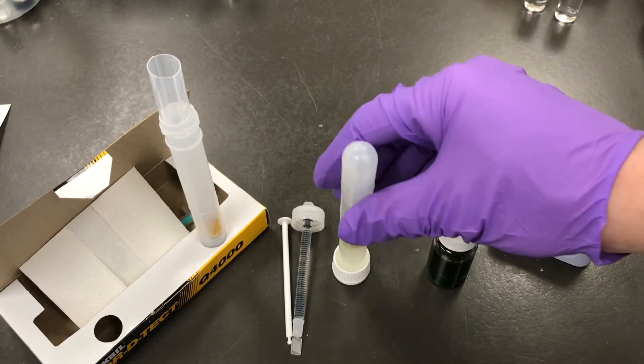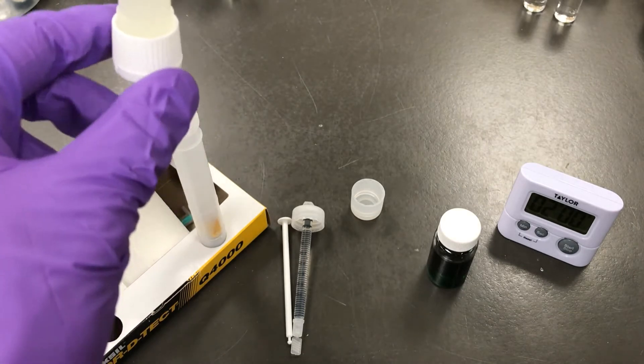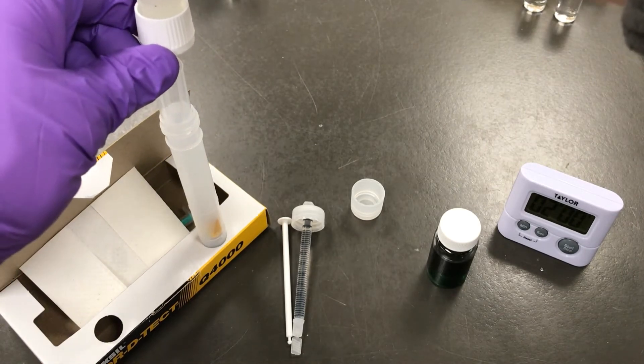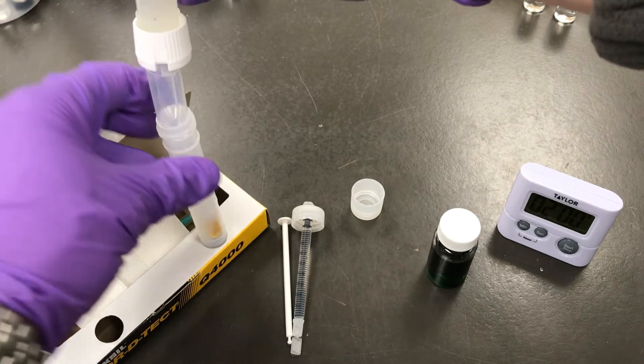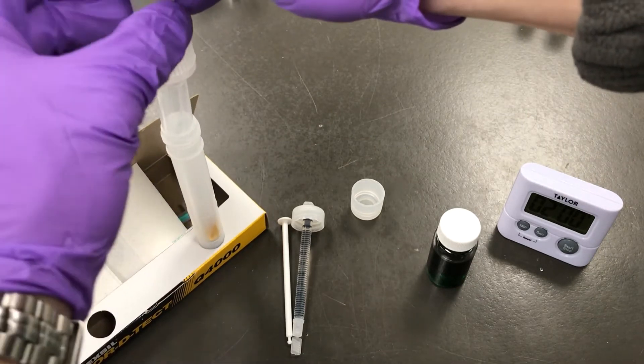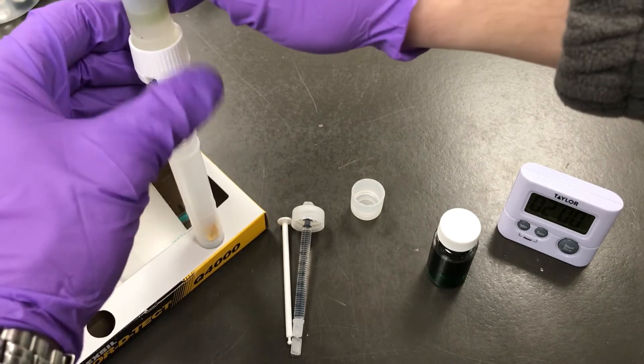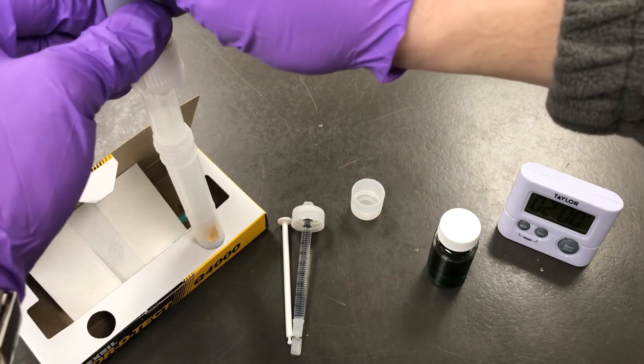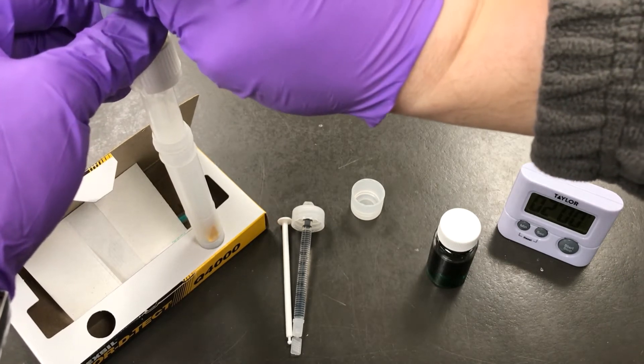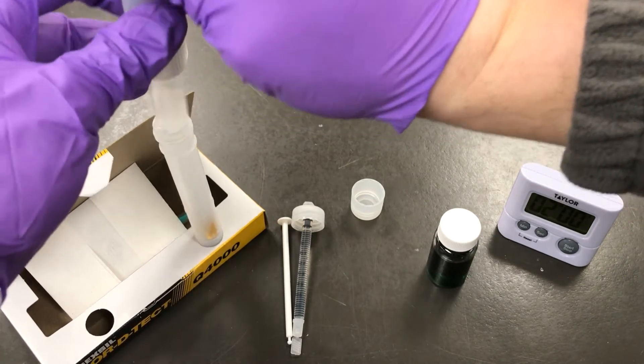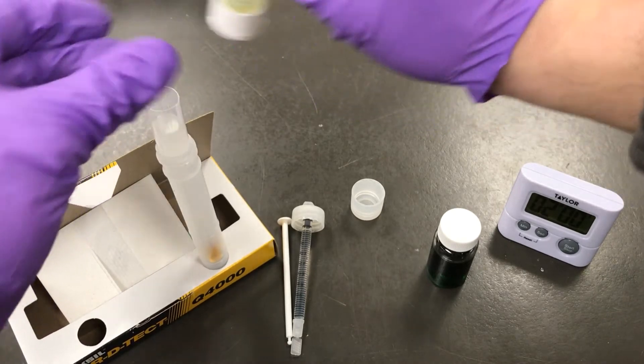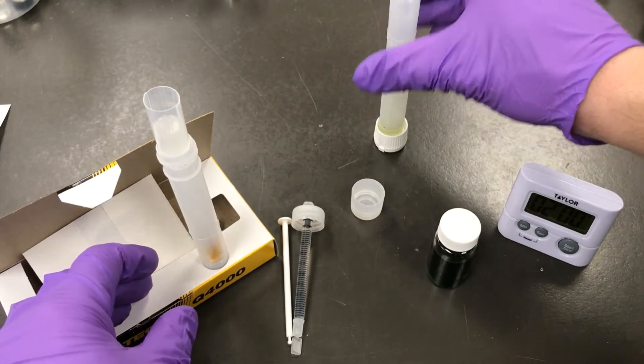When two minutes is up, carefully lift up test tube one, being careful not to tip it over. You don't want those phases to remix. Open the dispensing cap and filter the bottom aqueous layer only into the filter funnel. You want to try not to get any of the top oil layer into that filter funnel.